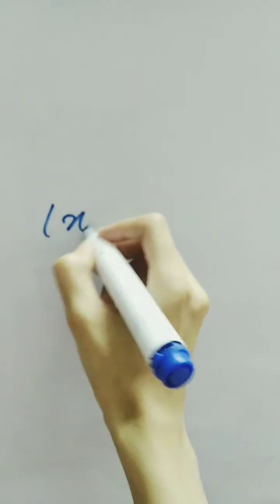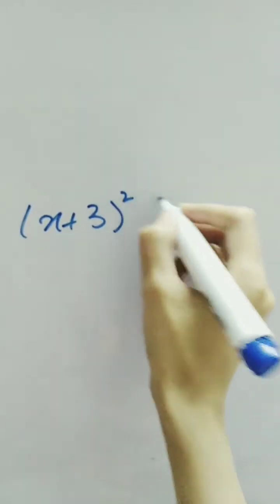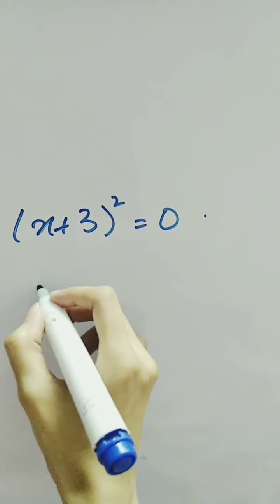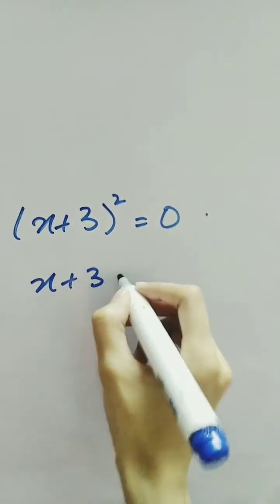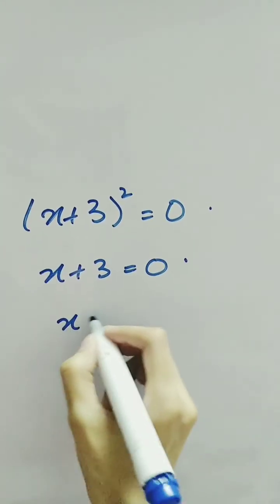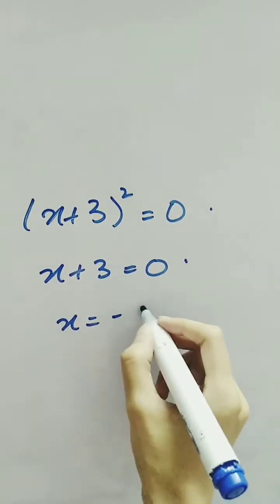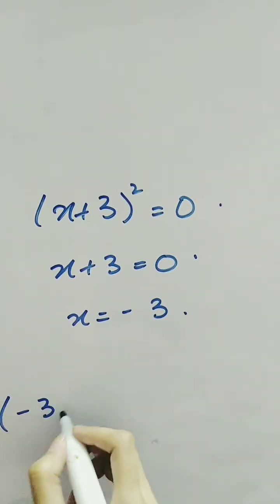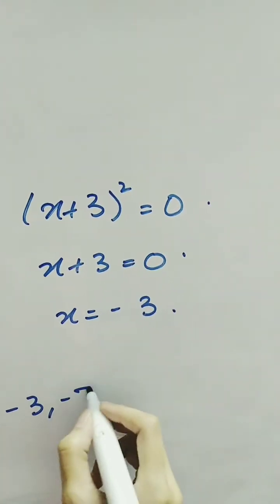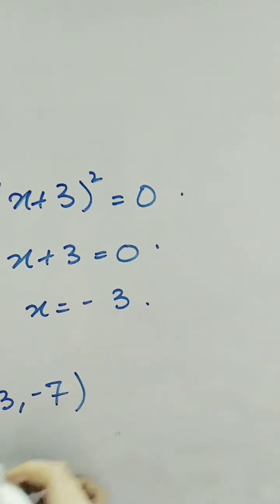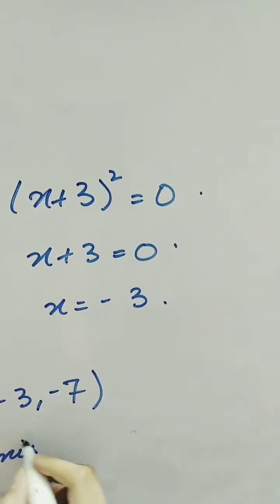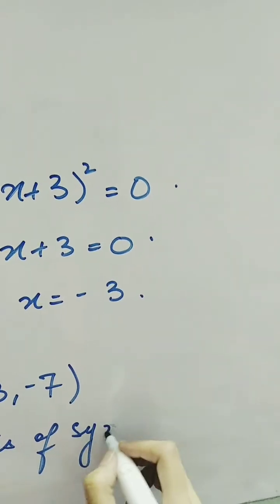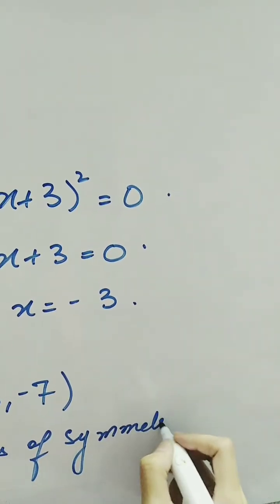Similarly, for (x + 3)², if we equate it with 0, we will have x + 3 = 0, or x = -3. So our vertex comes out as (-3, -7), and the axis of symmetry is x = -3.